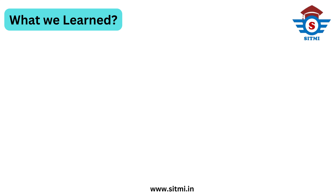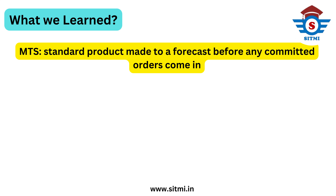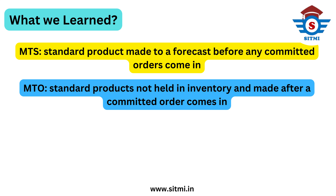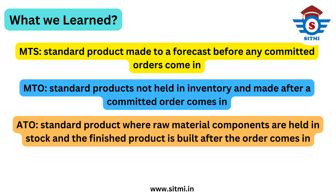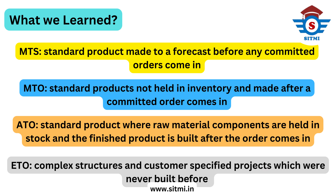To summarize: Make to Stock is a standard product made to forecast before any committed order is received from the customer. Make to Order is a standard product which is not held in inventory and is made only after a committed order is received. Assemble to Order is a standard product where raw material components are held in stock and the finished product is assembled only after a customer order is received. Engineer to Order involves complex, customer-specified projects that were usually never built in the past and are built based on design and customer approval.